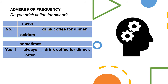If you want to answer affirmatively, you can say: Yes, I sometimes drink coffee for dinner. Yes, I always drink coffee for dinner. Yes, I often drink coffee for dinner. When you answer with sometimes, it normally means you do it 50% of the time. When you answer with always, it means you do it 100% of the time. When you answer with often, it normally means that you do it around 75% of the time.